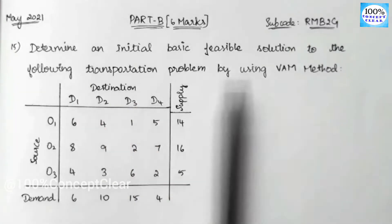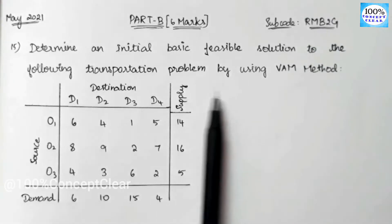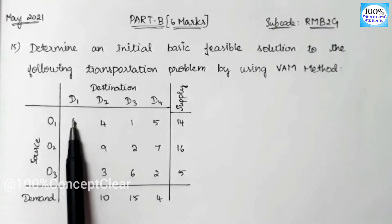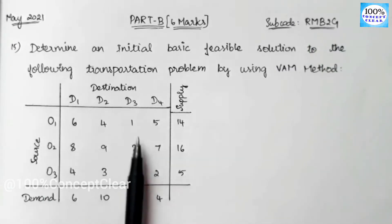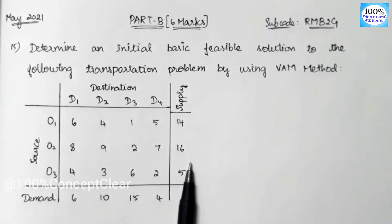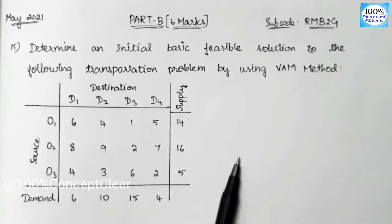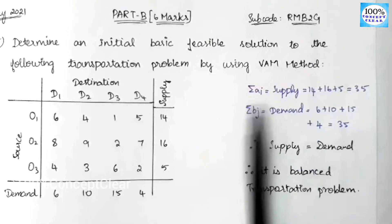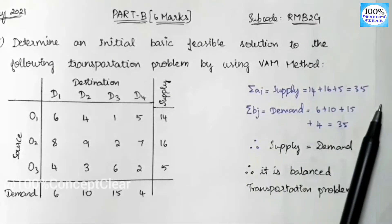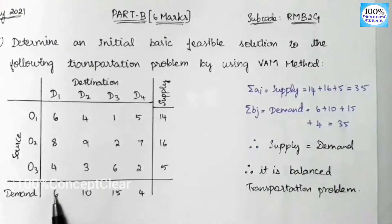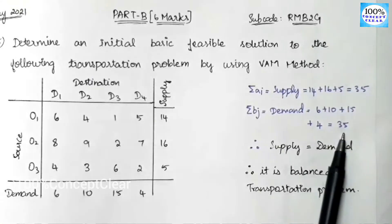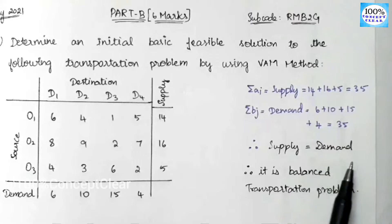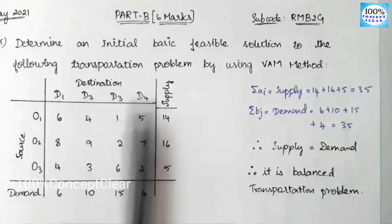For the Minimization sum, we have to provide all the information and numbers. Next step is to check whether the sum is a Balanced or Unbalanced Transportation Problem. We add demand and supply: supply is 14+16+5 = 35. Demand is 6+10+15+4 = 35. Since supply equals demand (35 = 35), this is a Balanced Transportation Problem.